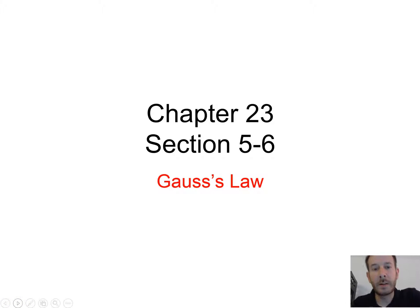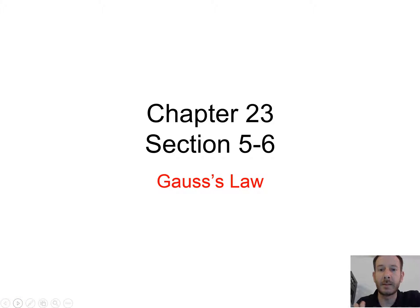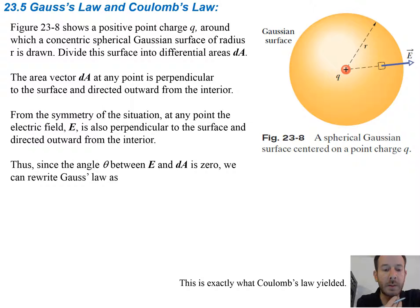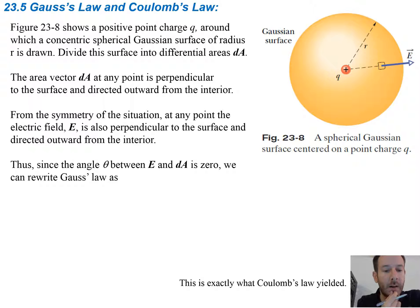In this lecture we're going to be continuing on with chapter 23, covering sections 5 and 6. The first thing we want to do is look at Gauss's law and Coulomb's law. It turns out that you can actually derive Coulomb's law from Gauss's law.